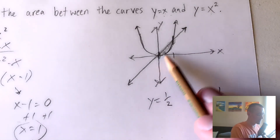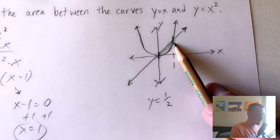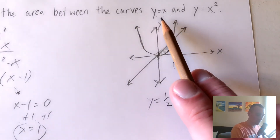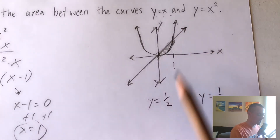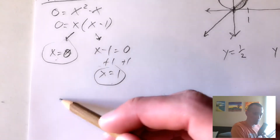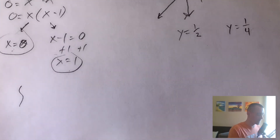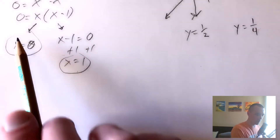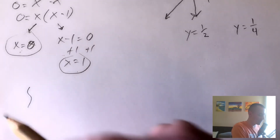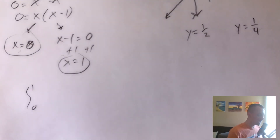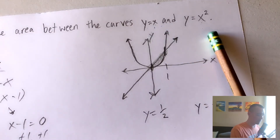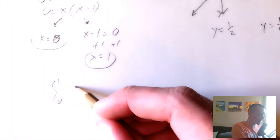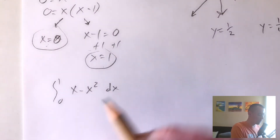So we've figured out that the area exists between x equals zero and x equals one, and over that range y equals x is our top function and y equals x squared is our bottom function. To find the area, we set up an integral where the bounds are zero and one — the intersection points — and the integrand is our top function minus our bottom function: the integral from zero to one of (x minus x squared) dx.